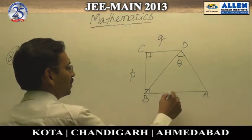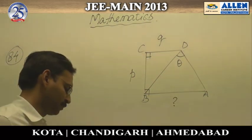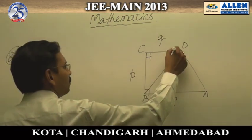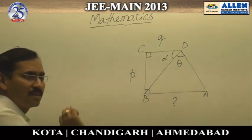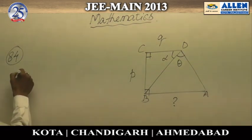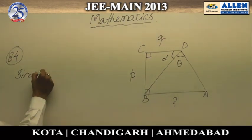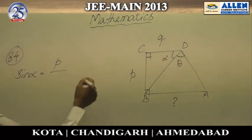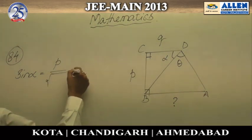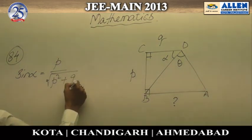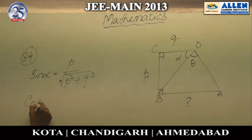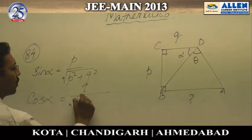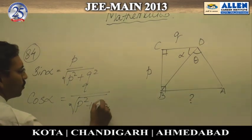We have to find out the length AB. Let us assume angle BDC is alpha. Since BCD is a right angle triangle, sin alpha equals p over BD, where BD is the hypotenuse, which is square root of p squared plus q squared. Similarly, cos alpha equals q over square root of p squared plus q squared.